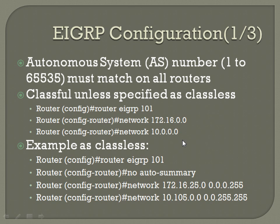If you want to do it as classless, the configuration is very similar to RIP: 'router EIGRP' and then your AS number, which must match on all routers. The 'no auto-summary' command — just like it makes RIP version 2 classless — also makes EIGRP classless. Since you're in a classless network, you need to advertise the subnet using the wildcard mask: 'network' followed by your network address and then your wildcard subnet. To get your wildcard subnet, take all 255s and subtract your actual subnet from it.